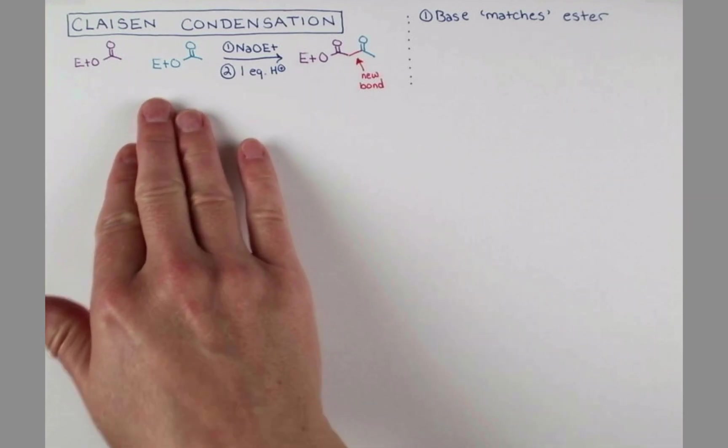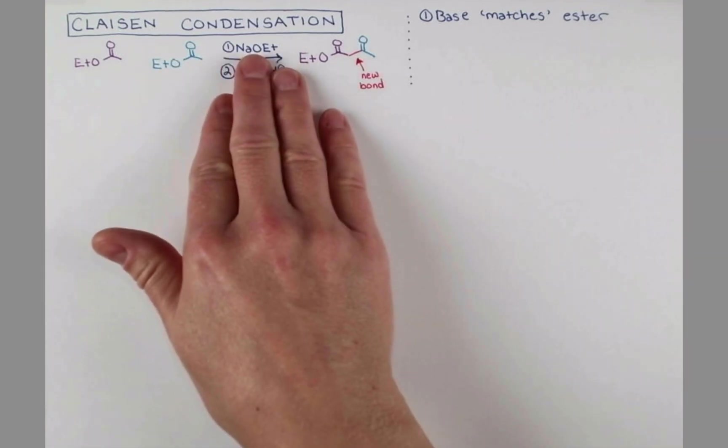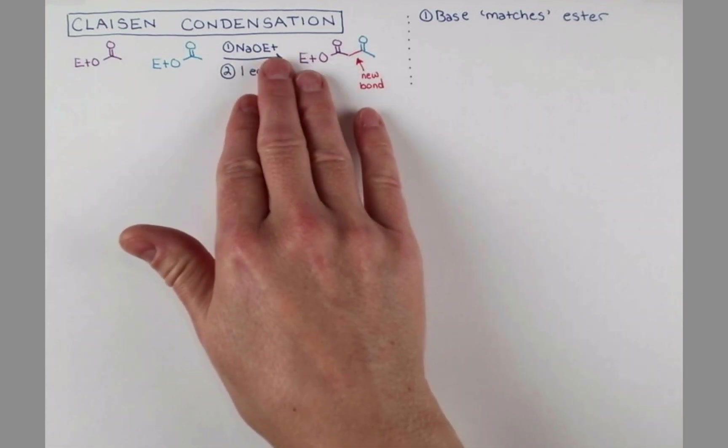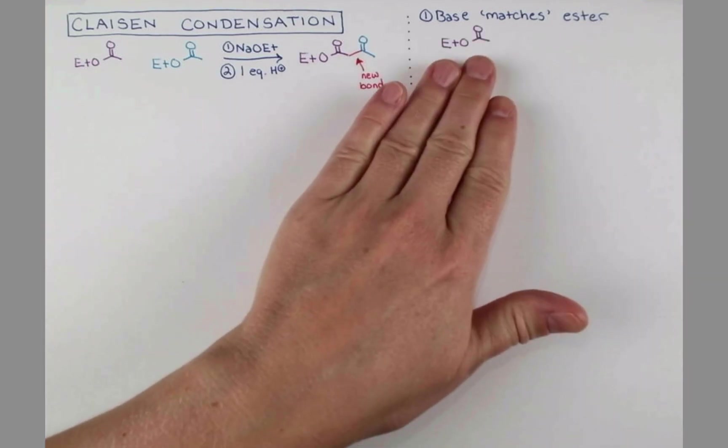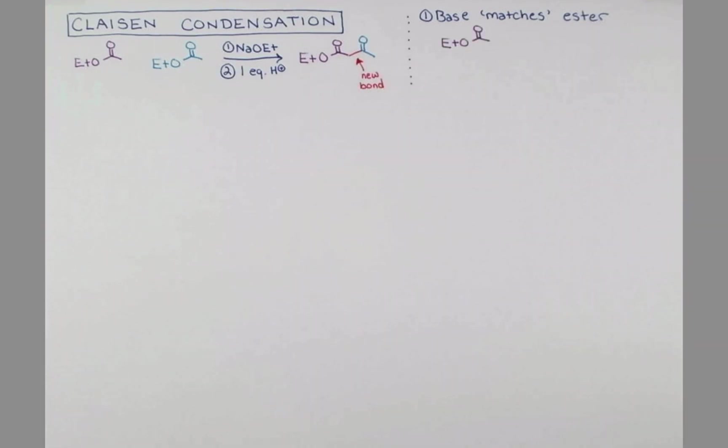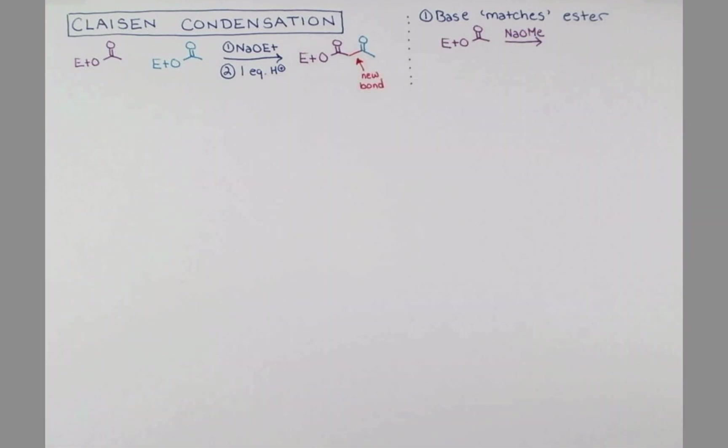We could have an MEO or maybe some other ester. We have an ethyl group. So we use sodium ethoxide as the base. Let me show you why this is important. Say we begin with this ethyl ester, but we treat it with sodium methoxide. Here the compound can undergo a transesterification reaction, where this OME can attack here replacing the ethyl group.